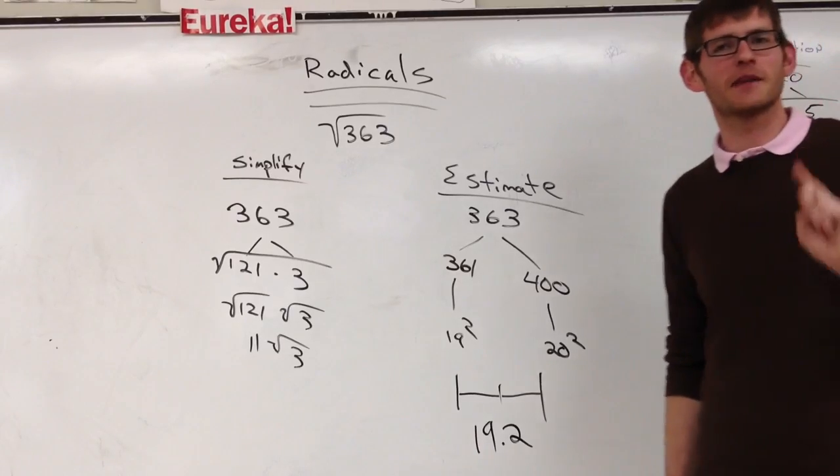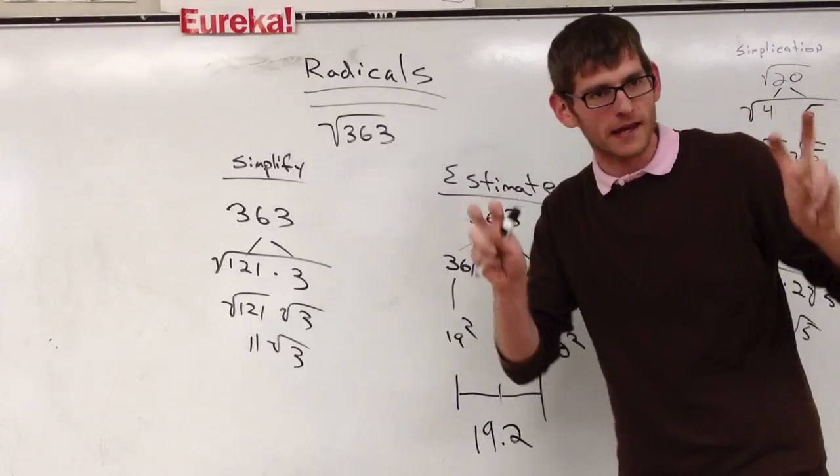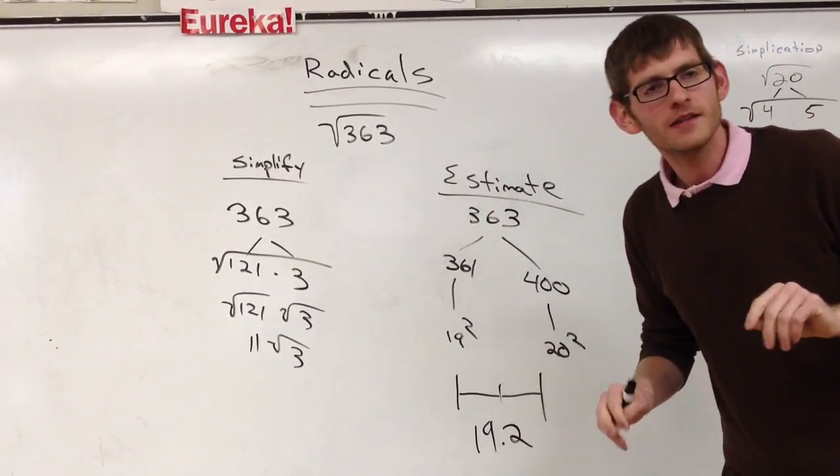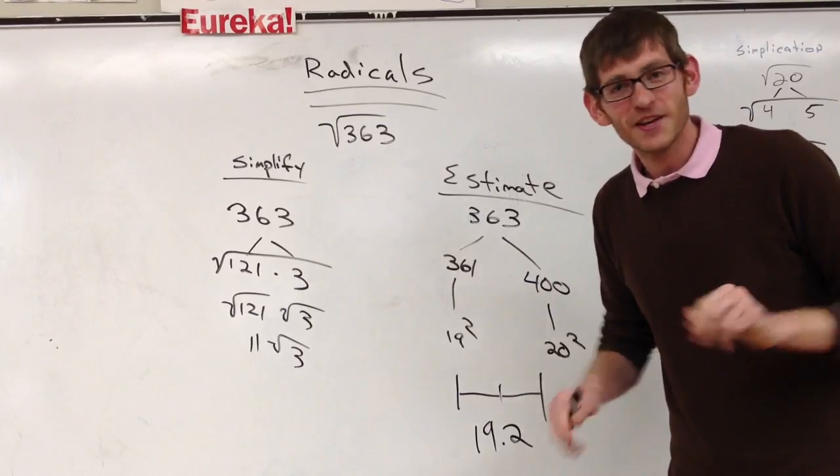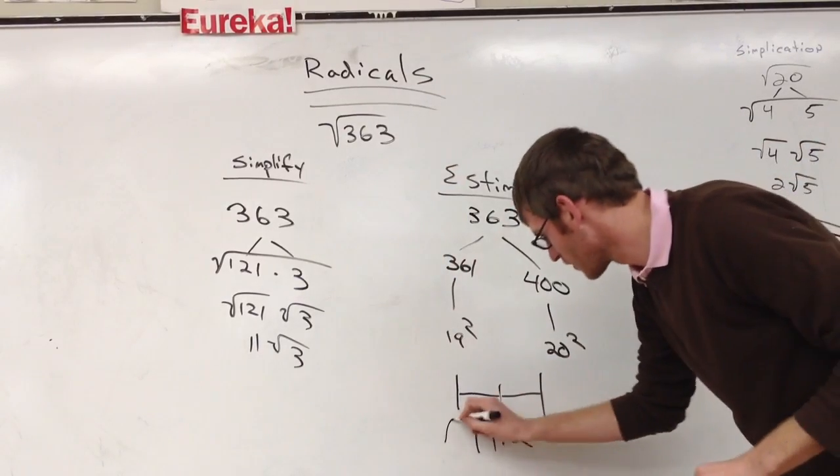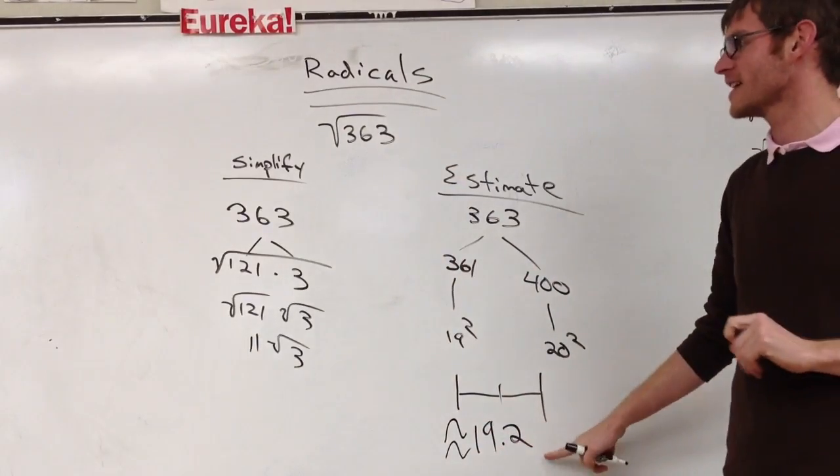And then somebody else. What is the mathematical symbol for approximately? Lorna. The squiggly. Yeah, the squiggly. It looks like this. So this means approximately 19.2.